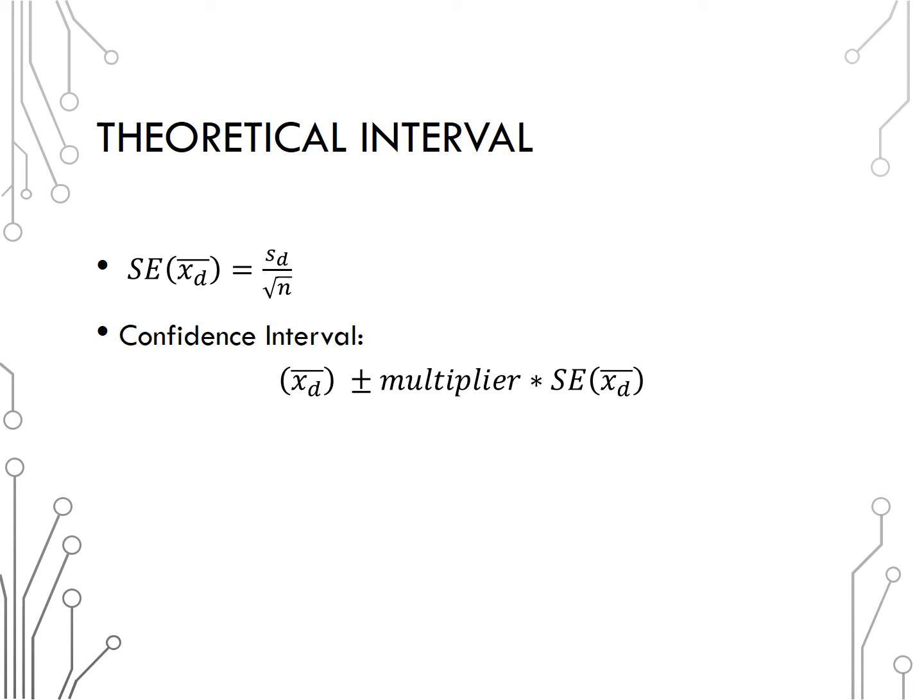Since we are working with means again, we will refer to the t-distribution to obtain our multiplier, and so our confidence interval is our observed statistic, X bar d, plus or minus the multiplier from that t-distribution times the standard error formula written above, S sub d over the square root of n.